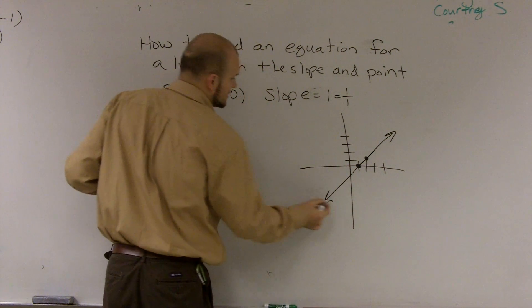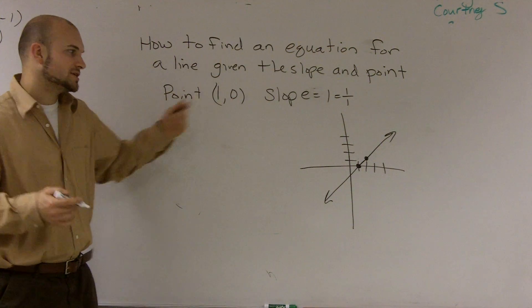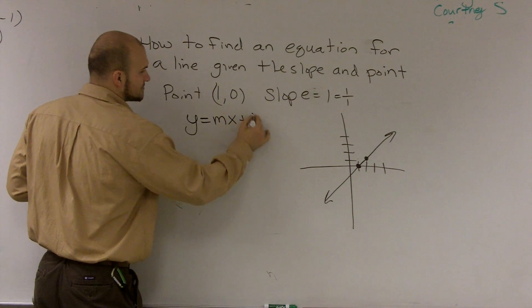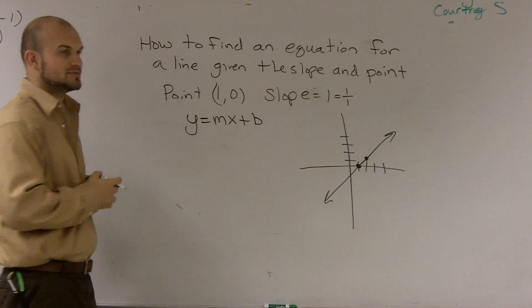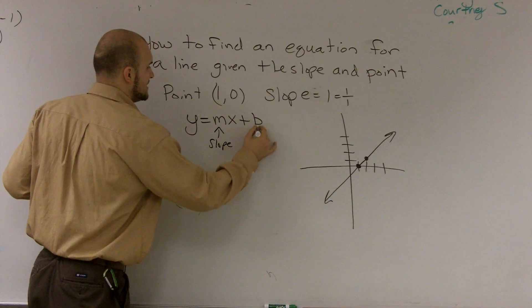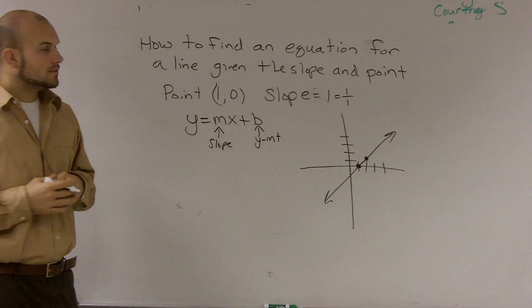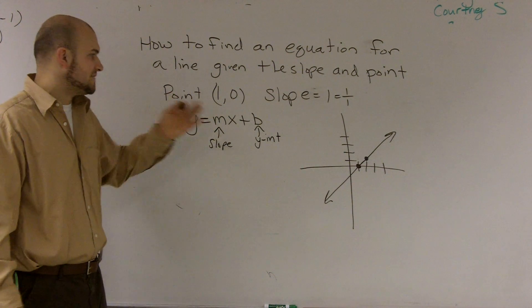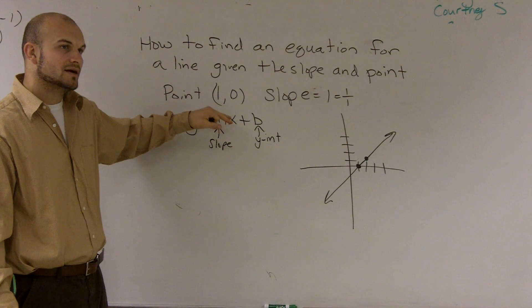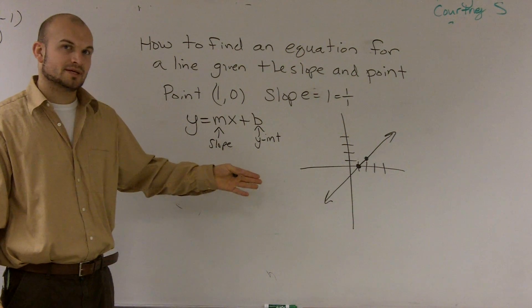However, we're not asking to graph the problem. They're asking to find the equation, and we know an equation for a line in slope-intercept form is y equals mx plus b, where m is your slope and b is your y-intercept. So what I need to do is find out all my missing parts — I need to figure out what the slope is and what the y-intercept is.